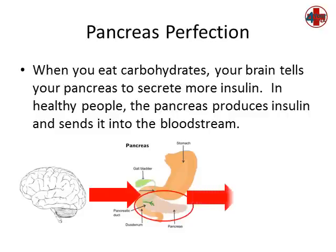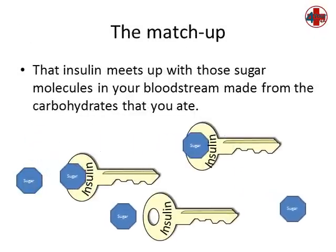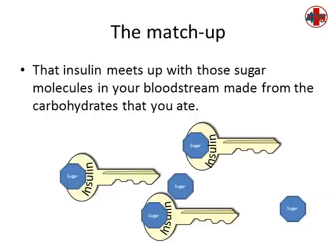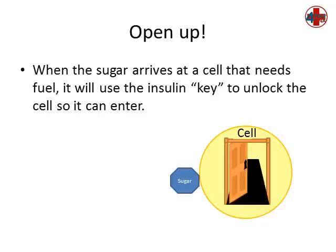In healthy people, the pancreas produces insulin and sends it into the bloodstream. That insulin meets up with those sugar molecules in your bloodstream made from the carbohydrates that you ate. When the sugar arrives at the cell that needs fuel, it will use the insulin key to unlock the cell so that it can enter.